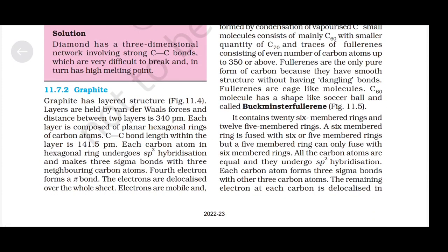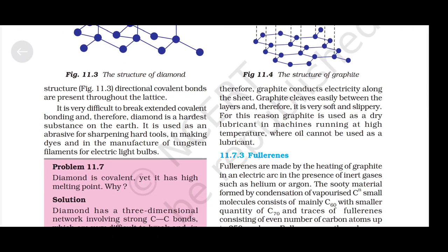Graphite has a layered structure. Layers are held by van der Waals forces and the distance between two layers is 340 pm. Each layer is composed of planar hexagonal rings of carbon atoms; the carbon-carbon bond length within the layer is 141.5 pm. Each carbon atom in the hexagonal ring undergoes sp² hybridization and makes three sigma bonds with three neighbouring carbon atoms. The fourth electron forms pi bonds — electrons are delocalized over the whole sheet, making graphite electrically conductive along the sheet. Graphite cleaves easily between the layers and therefore is very soft and slippery. For this reason, graphite is used as a dry lubricant in machines running at high temperatures where oil cannot be used.